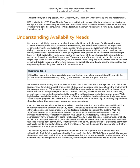Understanding Availability Needs: It's common to initially think of an application's availability as a single target for the application as a whole. However, upon closer inspection, certain aspects of an application or service have different availability requirements. For example, some systems might prioritize receiving and storing new data ahead of retrieving existing data, or prioritize real-time operations over configuration changes. Services might have very high availability requirements during certain hours but can tolerate longer disruption outside of these hours. The benefit of decomposing an application into constituent parts is to focus efforts and expense on availability according to specific needs, rather than engineering the whole system to the strictest requirement.